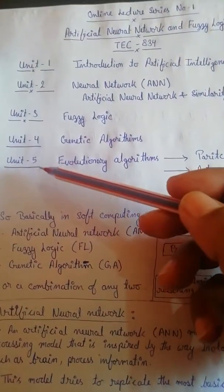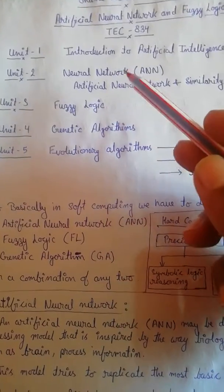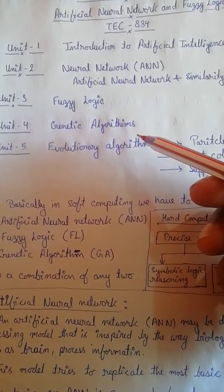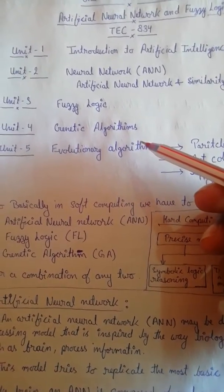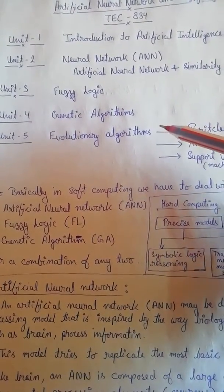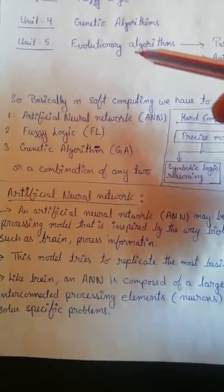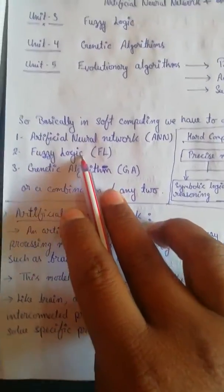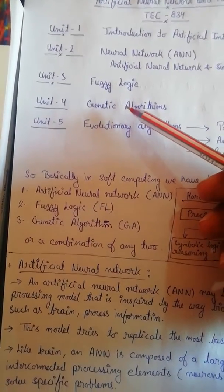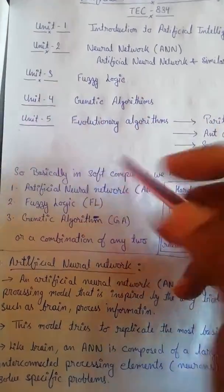I'm really sorry that I have made the video based on handwritten notes — I wanted to make the video on slides, but we also have to solve some questions on paper, so that's why I prefer the handwritten notes. I have sent you these handwritten notes, so please watch the video with those notes. First we will go through a little bit about these three topics: neural network, fuzzy logic, and genetic algorithms, which we will discuss in units 2, 3, and 4 of the course.